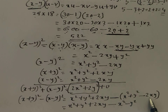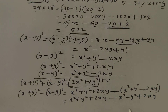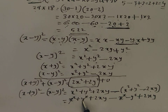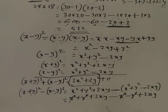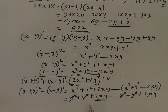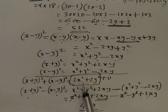When we subtract (x minus y)² from (x plus y)²: x squared minus x squared is 0, y squared minus y squared is 0, and 2xy plus 2xy gives 4xy. So the subtraction result is 4xy, and the addition result is 2x squared plus 2y squared.